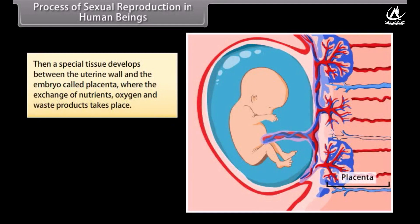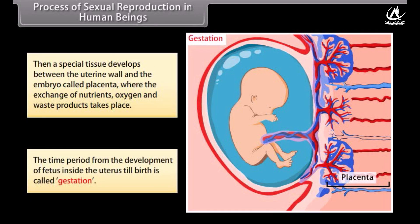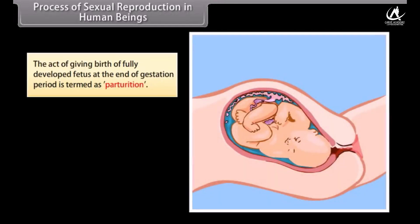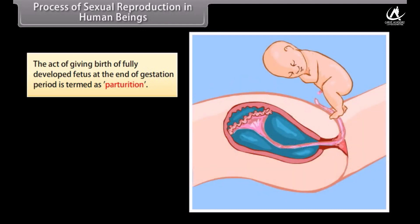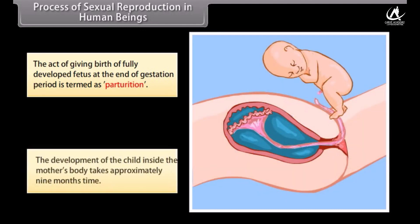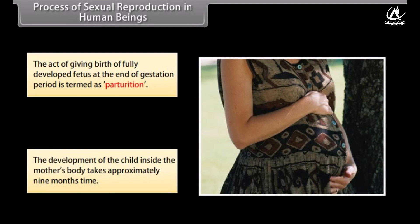A special tissue called the placenta develops between the uterine wall and the embryo, where exchange of nutrients, oxygen, and waste products takes place. The time period from the development of the fetus inside the uterus until birth is called gestation. The act of giving birth of the fully developed fetus at the end of the gestation period is termed parturition. The development of the child inside the mother's body takes approximately nine months.